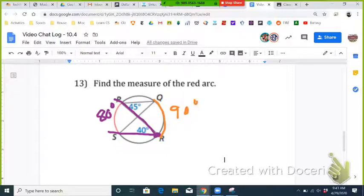So that would be 45, which would make this angle up here 45 plus 40 is 95, so this would be 85. Then that adjacent angle would be 95.